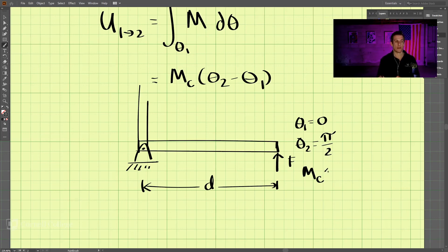And the moment here which is going to be a constant is f times d. So the work from state one to state two would be f times d is the moment, and then we would multiply that by pi divided by two minus zero, and that would be the work from zero degrees to 90 degrees.